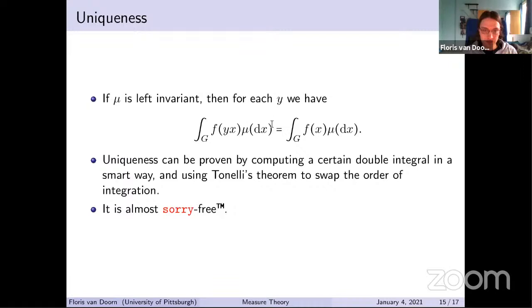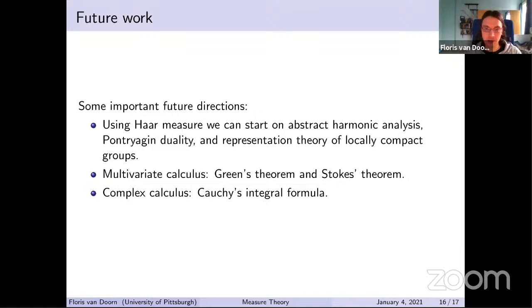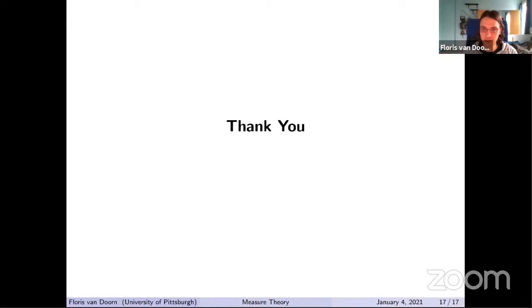Let me end on some future directions. Given that we have the Haar measure, we open up very exciting areas of mathematics, including abstract harmonic analysis, Pontryagin duality, and representation theory of locally compact groups. We can also do multivariate calculus like Green's theorem and Stokes' theorem, and complex analysis like Cauchy's integral formula. There's still a lot of exciting work to do in the measure theory library.